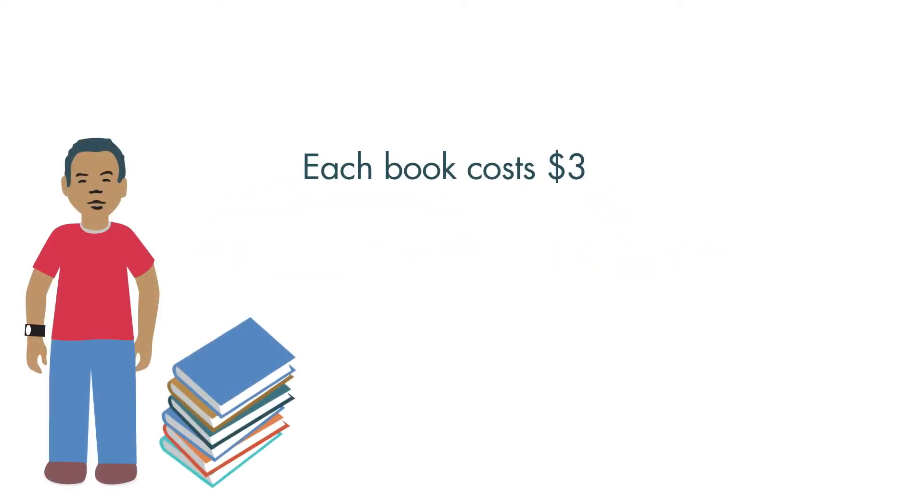Louis is selling books for $3 each. He sells 4 books on the first day and 2 books on the second day. How much money did he make?